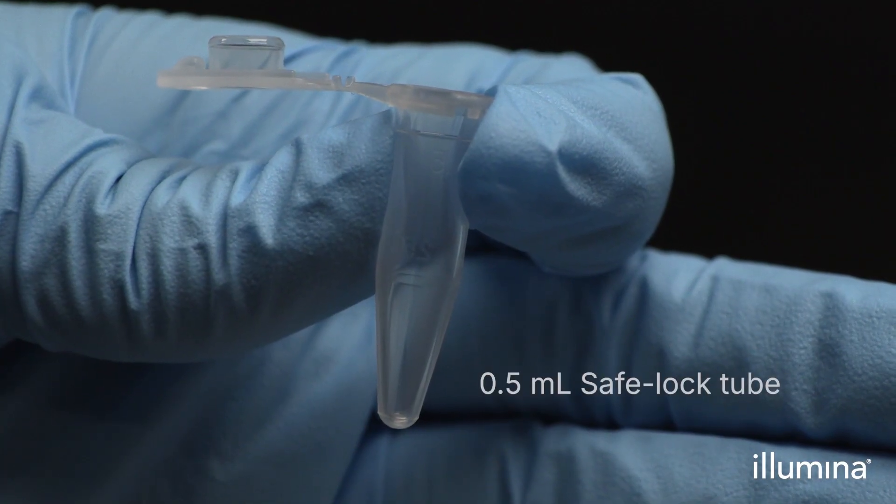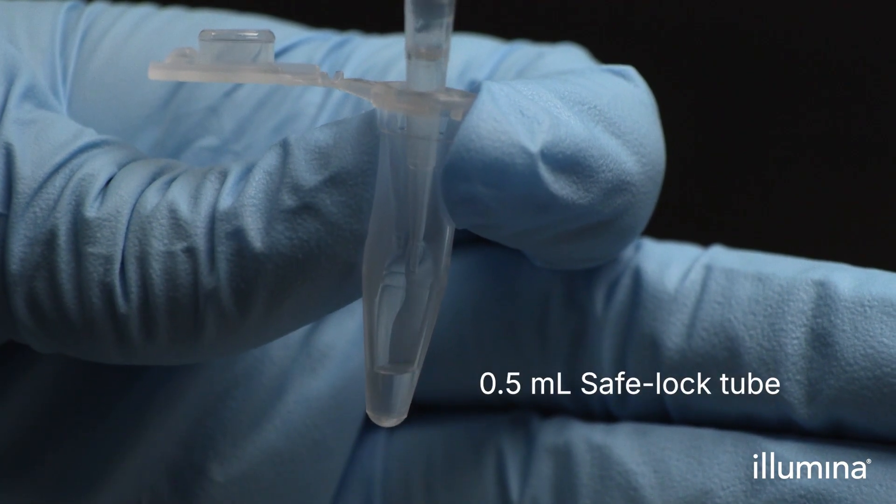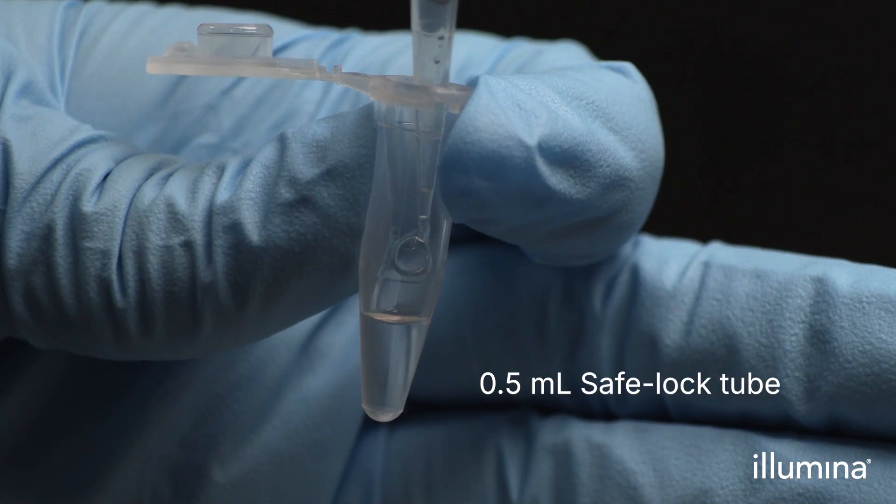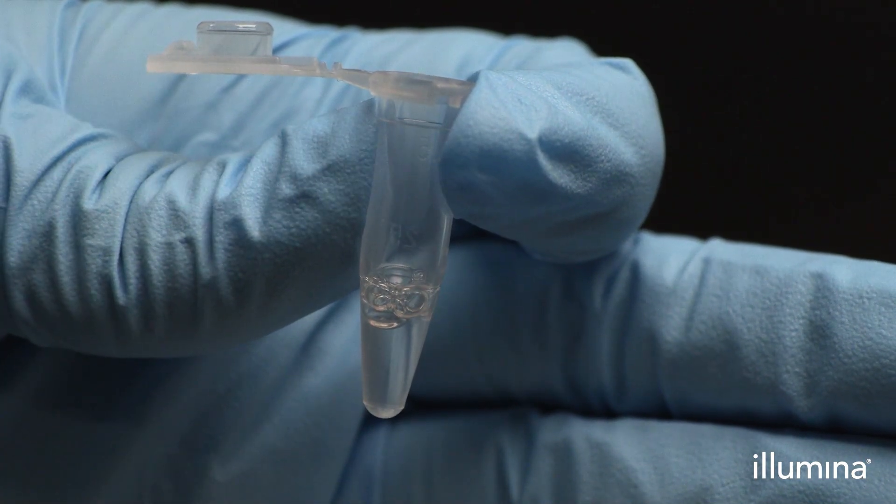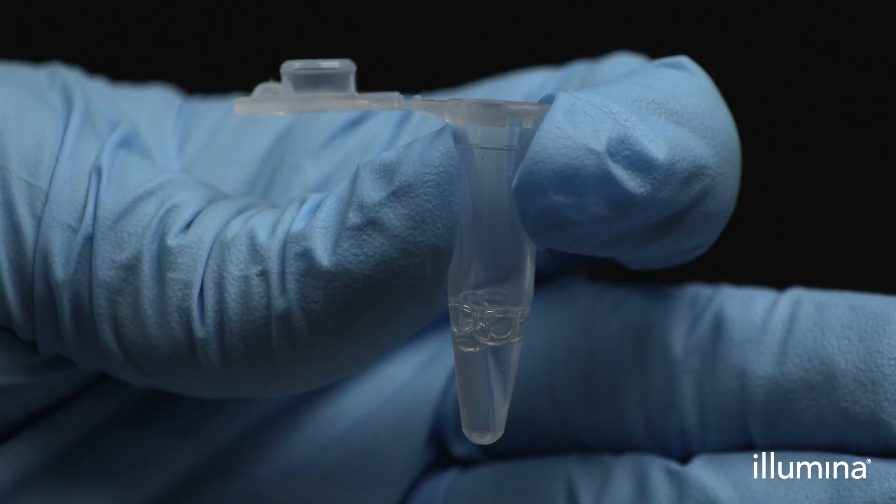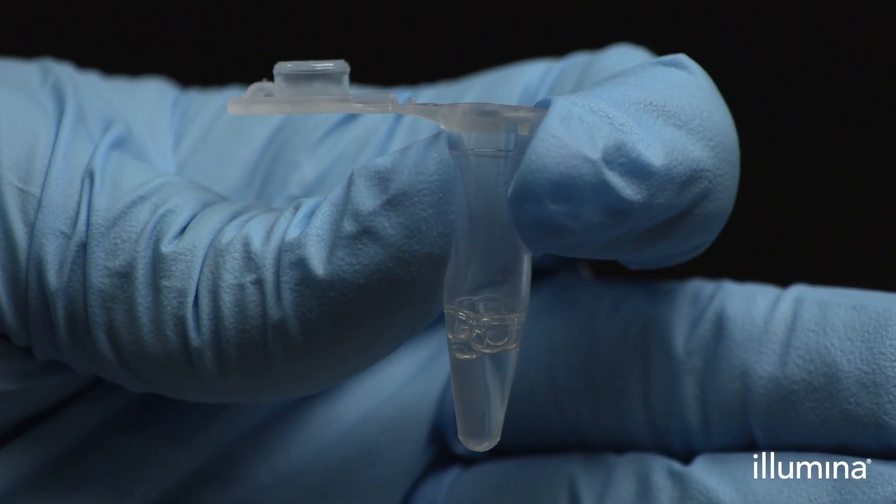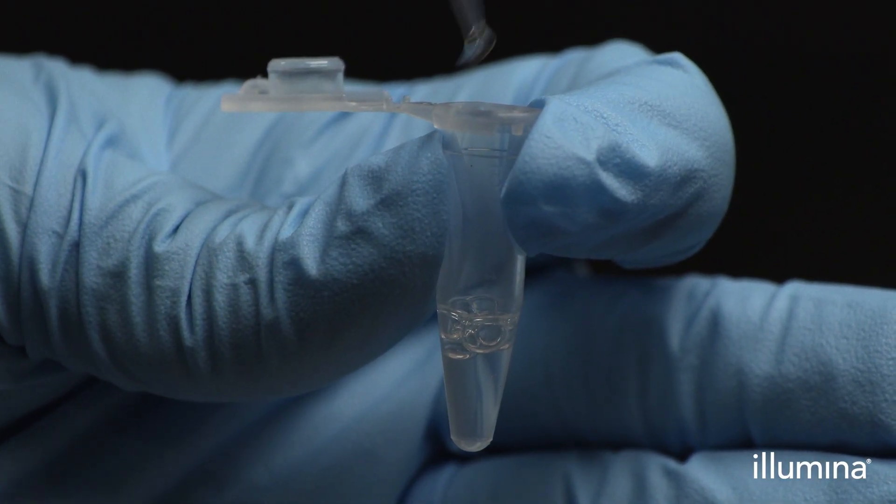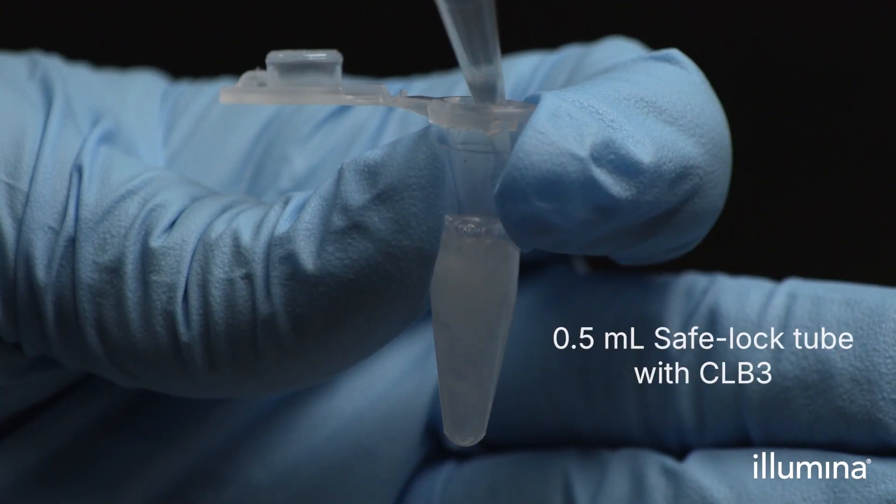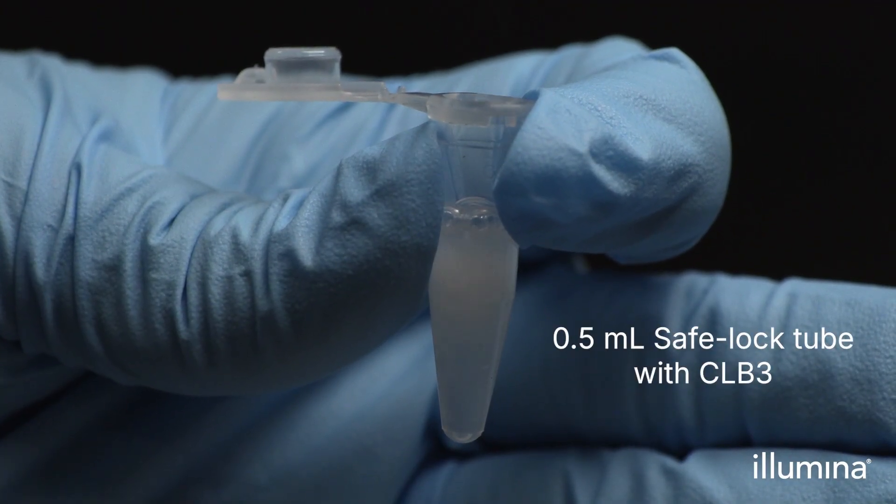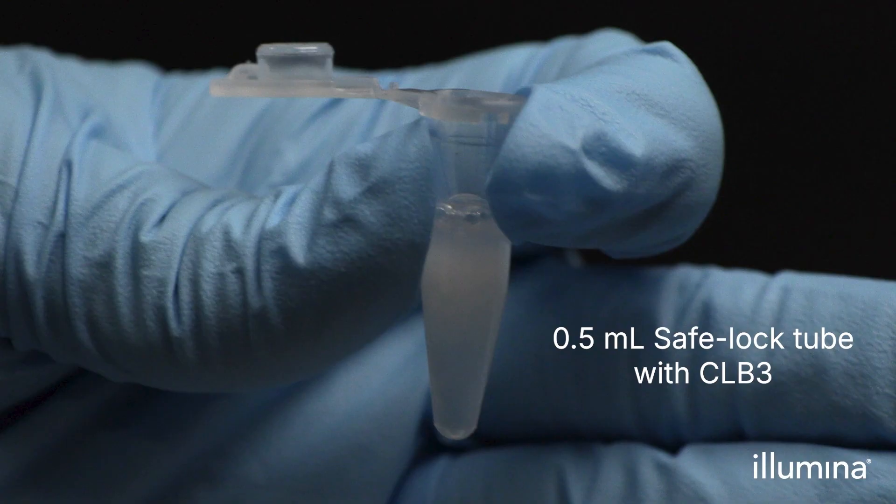Aliquot 90 microliters of CLB3 into a 0.5 ml Eppendorf safe lock tube for each sample being processed. For the remaining chemical lysis steps, we recommend processing one sample at a time. Add 270 microliters of partitioning reagent down the sidewall of one 0.5 ml tube containing CLB3.